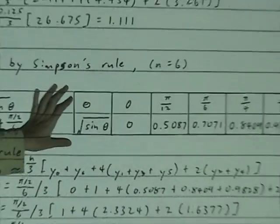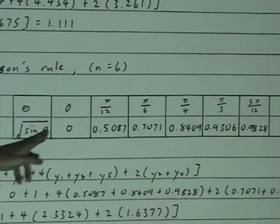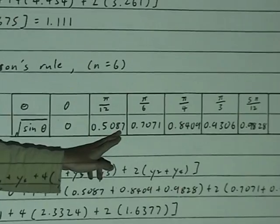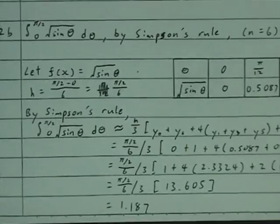With this, you are able to compile this table. Subbing in all these values here, and then after you use all these values into the Simpson's rule, you get 1.187.